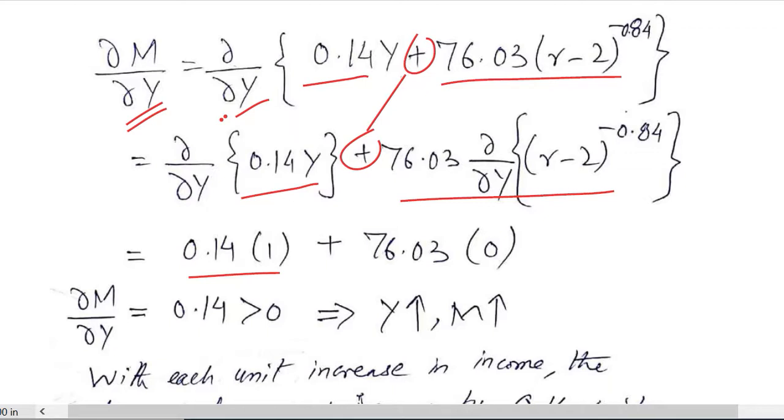Whereas here there was no Y in this, so we had to consider the answer equal to 0 because there was no relevant variable. Now the relevant variable was Y so the derivative gave us this answer which is actually a positive answer, 0.14.